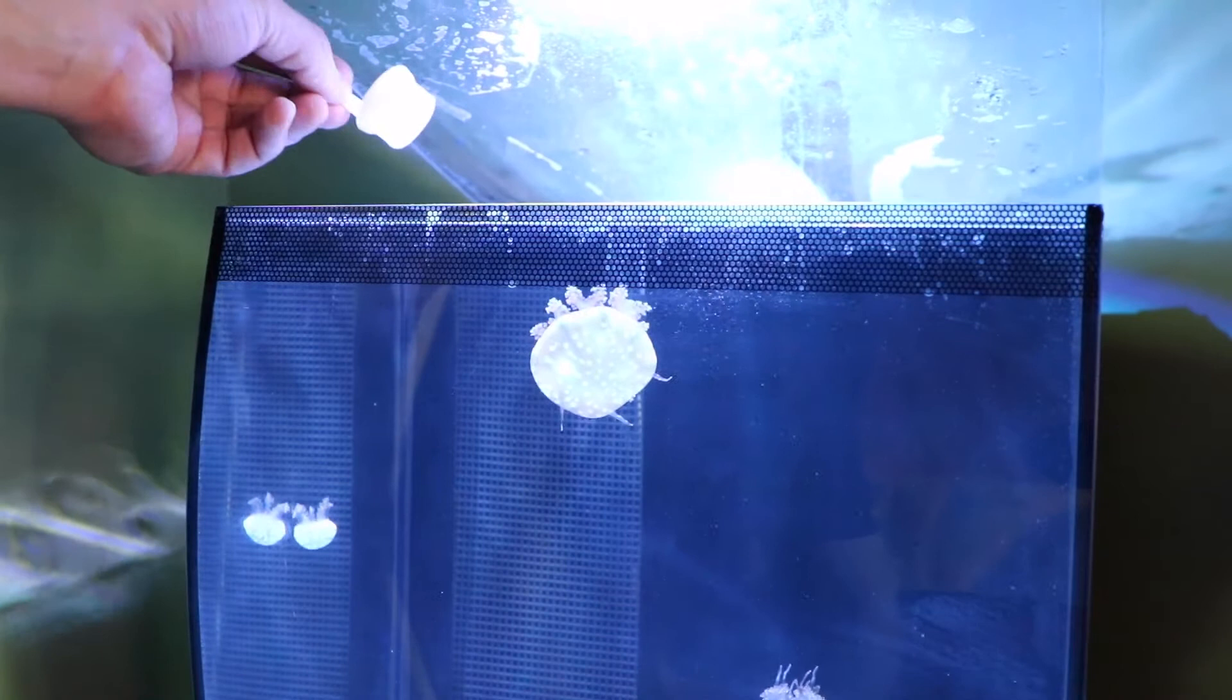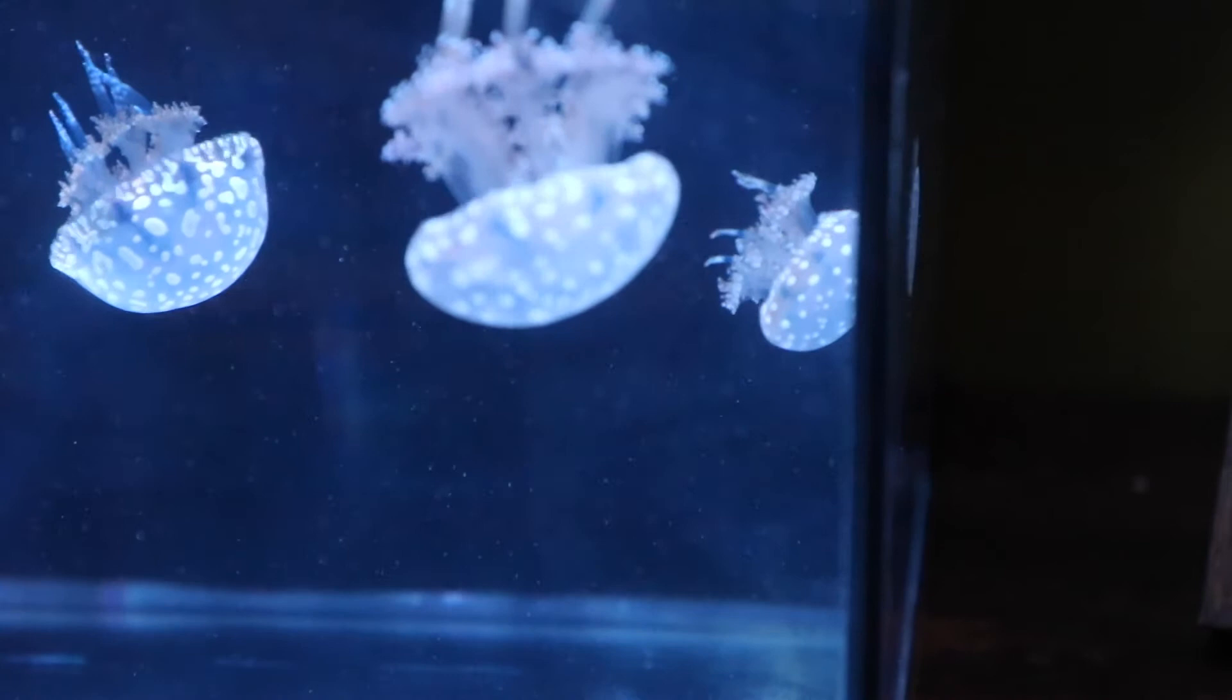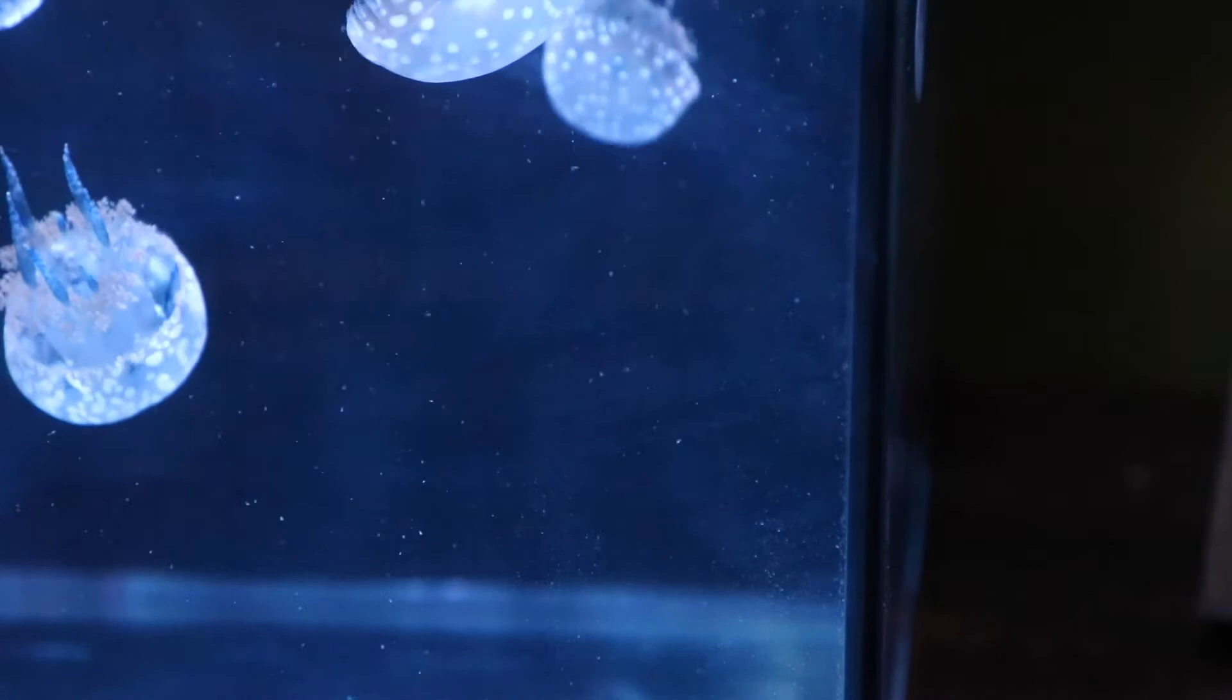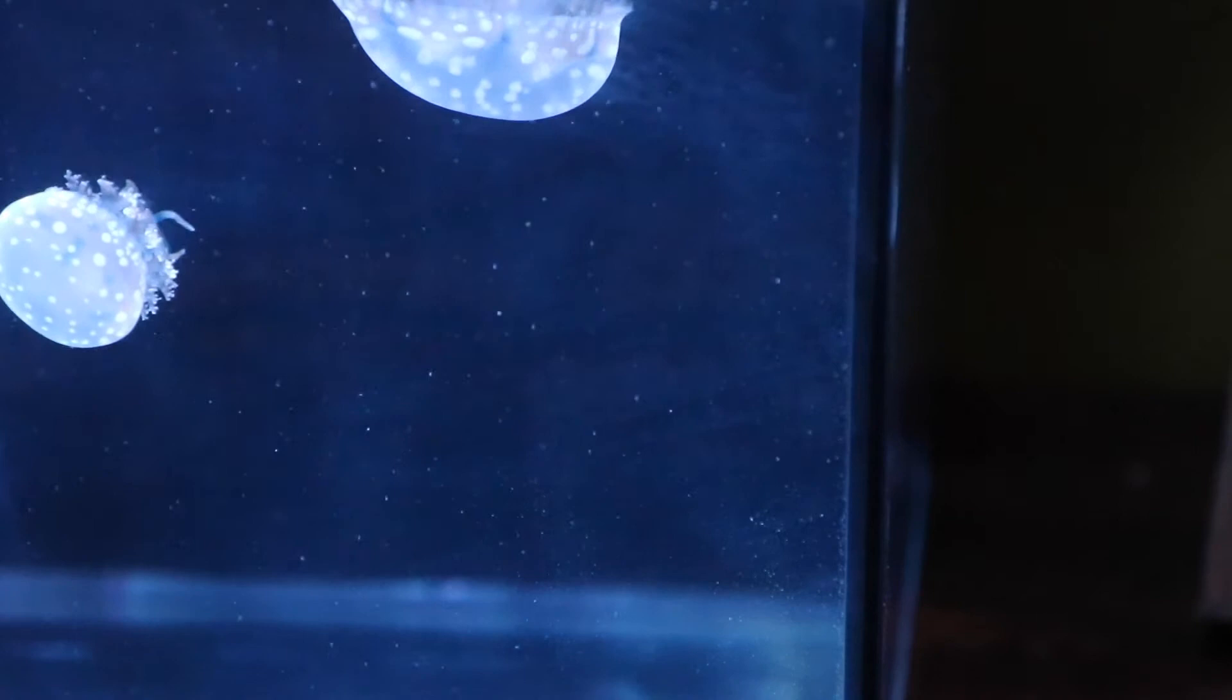Jellyfish are filter feeders which really just means that they take forever to eat. All of these little specks that you see floating around the water are the brine shrimp and they just kind of wait until they swim through it and they get caught in their tentacles. These guys will probably take 20 to 30 minutes to eat pretty much all of the shrimp.